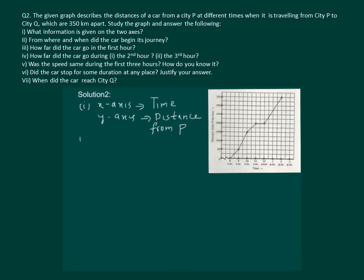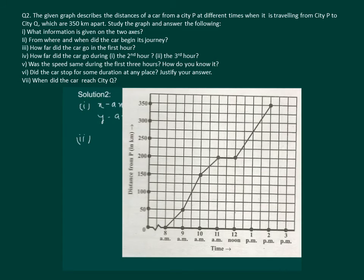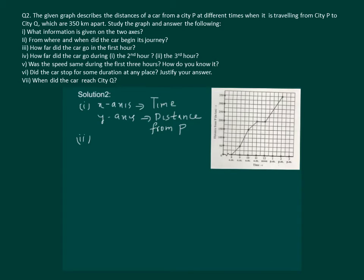Let us read the second part: from where and when did the car begin its journey? It is given in the question that the car is starting from city P. But to find the time, we see that at 8 a.m. the car is starting. So we will say the car starts from city P at 8 a.m.